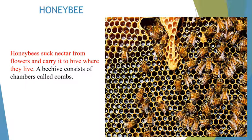Honey is collected from a beehive by lighting a fire under it. The heat and smoke drives the bees out of the hive. The honey collector then removes the hive and collects the honey stored in it.